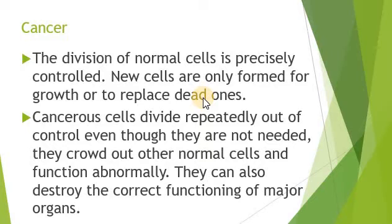The cells of the bone marrow, hair, nail, blood, and skin undergo normal regulated growth. In case of cancer cells, the cells are continuously dividing and out of control. They produce a burden on the normal cells, crowding them out. These cancer cells are not functionally normal — they perform their functions abnormally and can also destroy the correct function of major organs, disrupting the body's entire physiology.